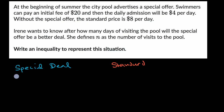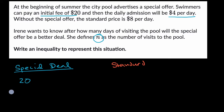In the special deal case, let's read the details again. It's an initial fee of $20, and then the daily admission will be $4 per day. N is the number of days that she visits. So in the special deal, she's going to spend $20 upfront, whether or not she visits anymore, plus $4 per day times N — so plus 4N, because N is the number of days.